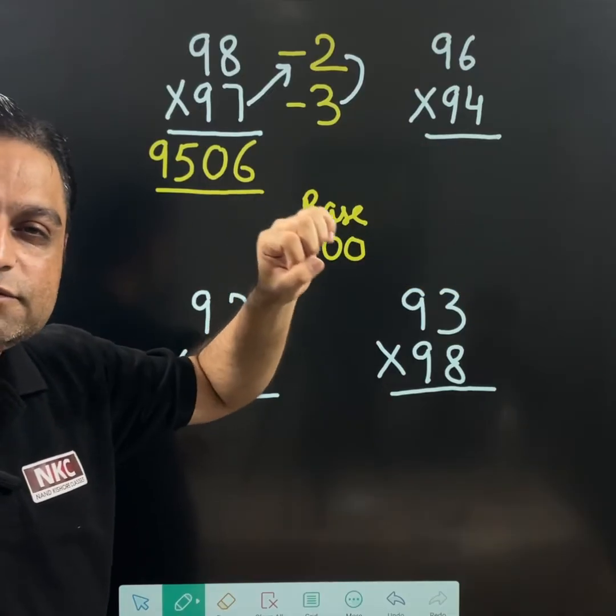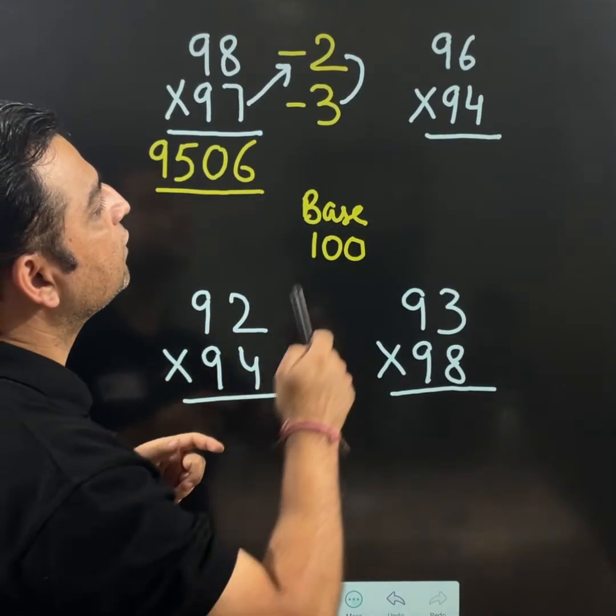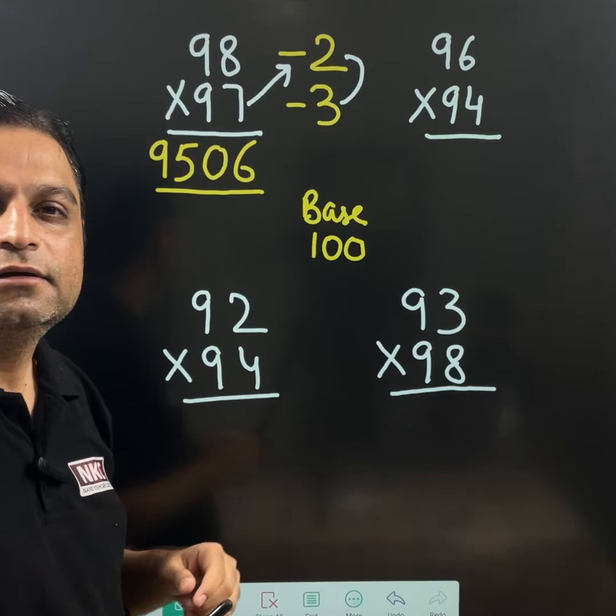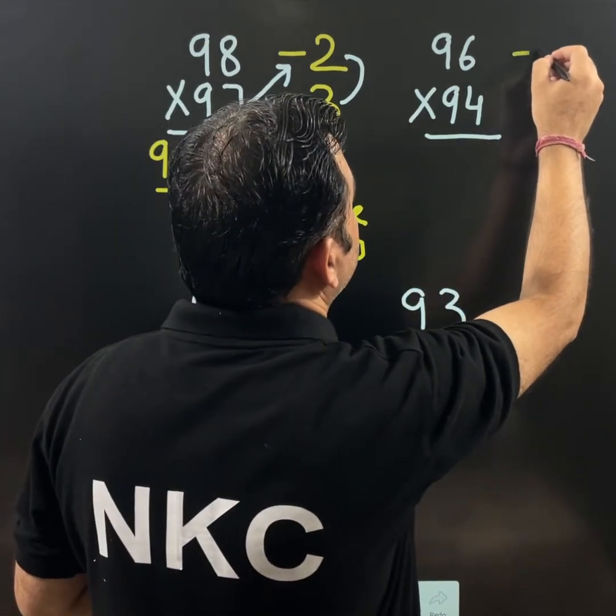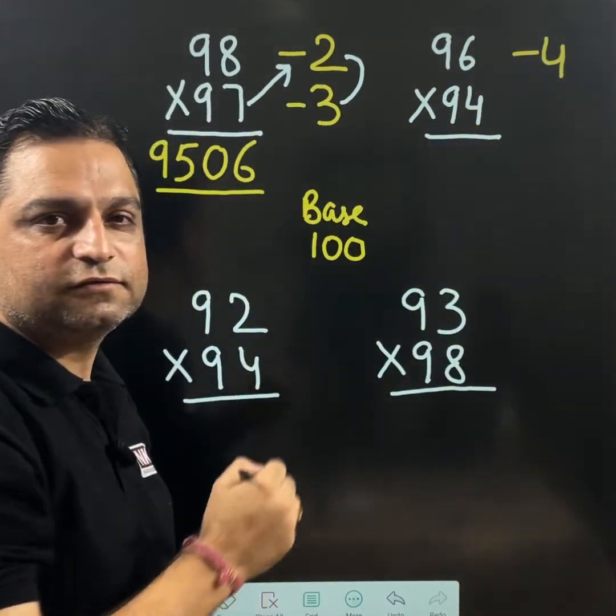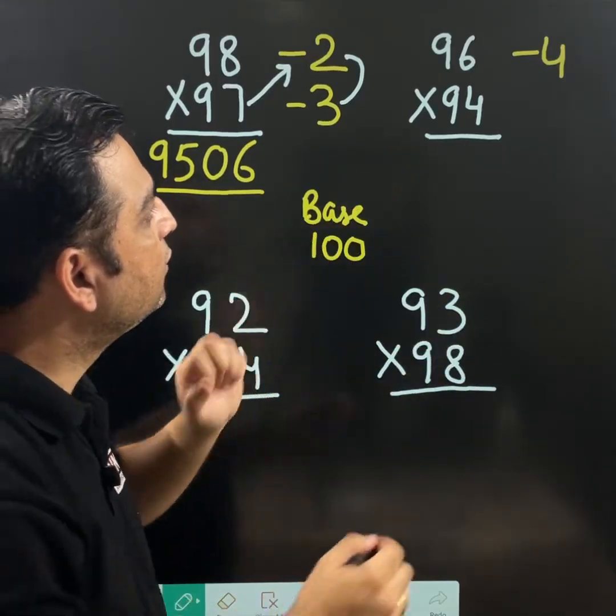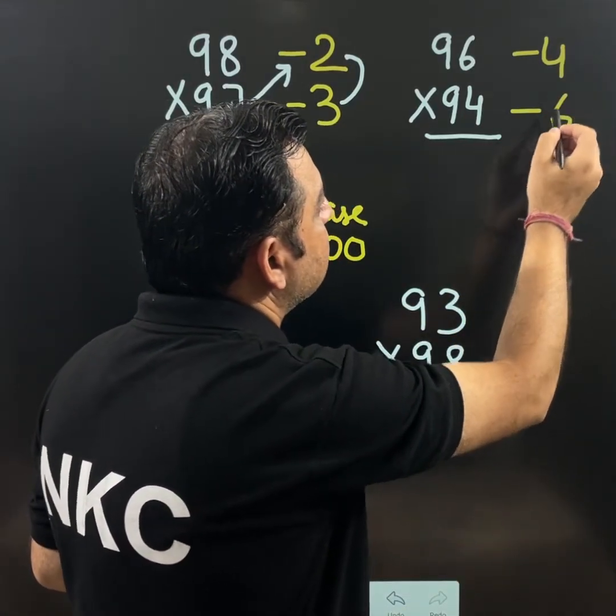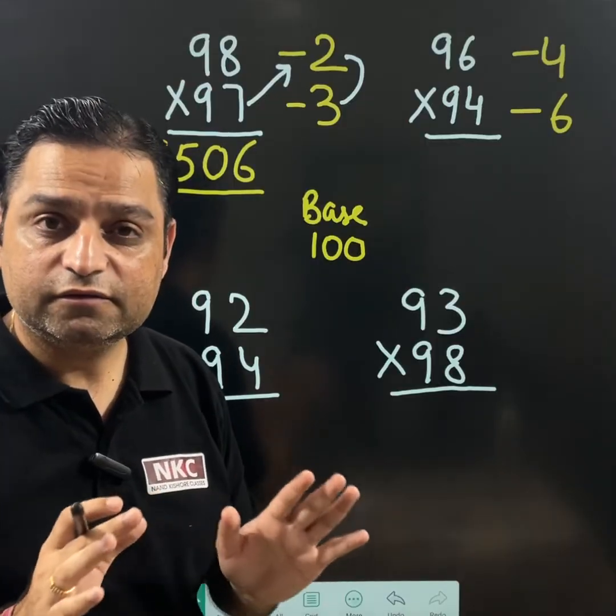Slowly I will do. You watch the video carefully. See 96. 100 minus 4 gives me 96. And 100 minus 6 gives me 94. Very easy.